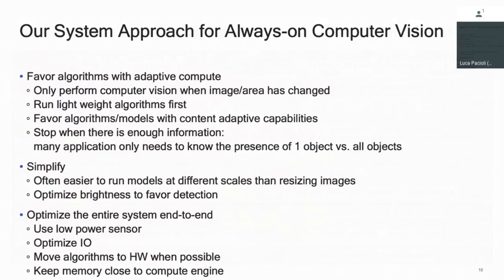Also, because we have a system focus in mind, we favor brightness to favor detection. This may not be obvious because our images are typically darker and higher contrast than what you and I would find comfortable to look at — but this does help our detector. We optimize the entire system: we use a low-power sensor, we optimize the I/O, and we move algorithms as soon as possible to the hardware. Within that hardware, we put memory as close as possible to the compute blocks, so multiple blocks can work in parallel at lower power and potentially higher compute.